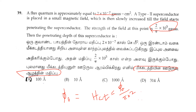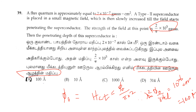Substituting the values: λ² = (2 × 10⁻⁷) divided by (π × (2/π) × 10⁵), which gives λ² = 10⁻¹² centimeter squared. Therefore λ = 10⁻⁶ centimeter. Option A is the correct answer: 100 Angstroms.